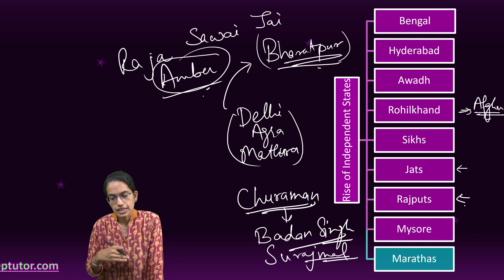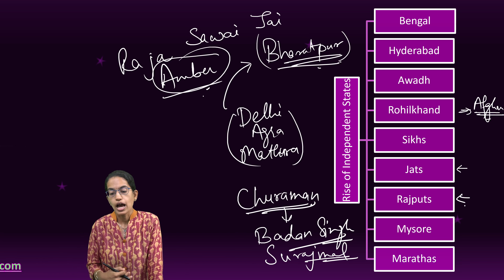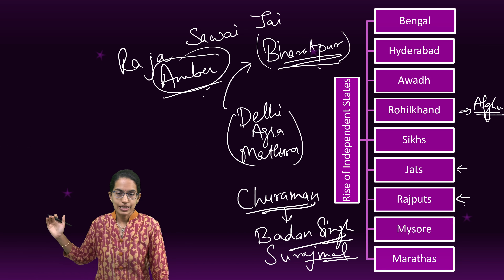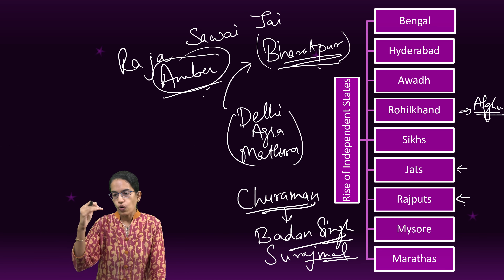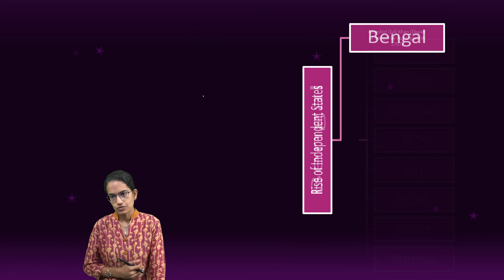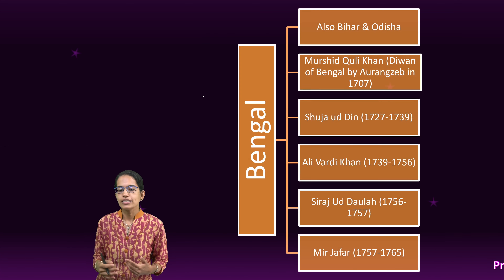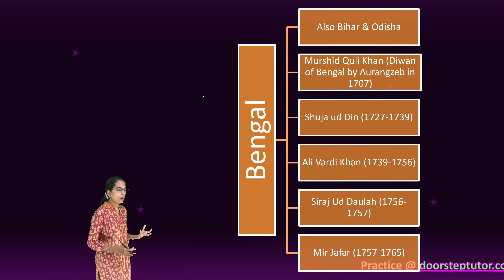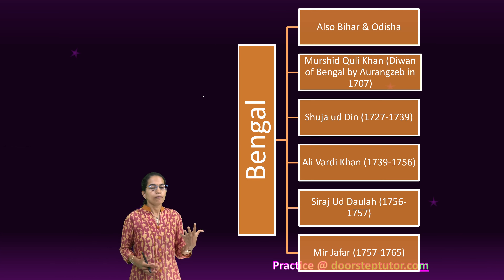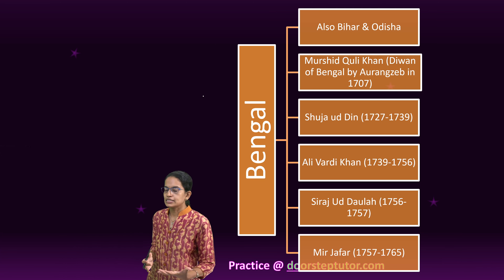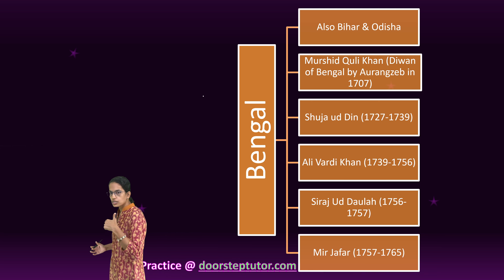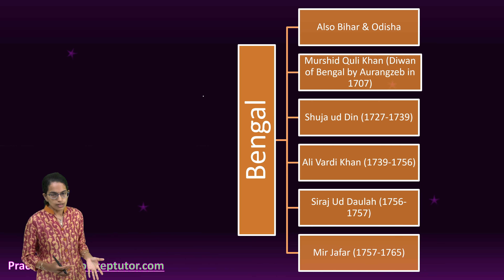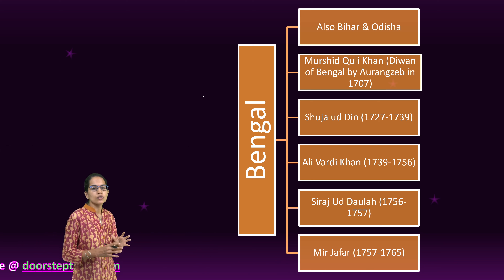Then we had the independent states of Mysore and the Marathas and the hierarchy that followed. So let's begin with Bengal. As we said, Bengal became an independent state, incorporating not just present-day Bengal but also Bihar and Odisha.